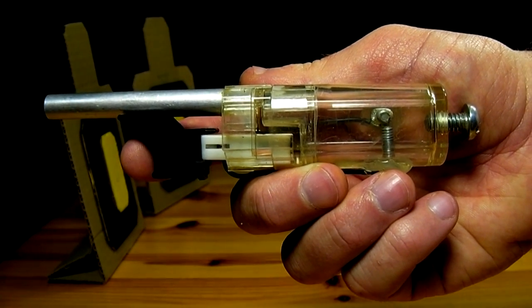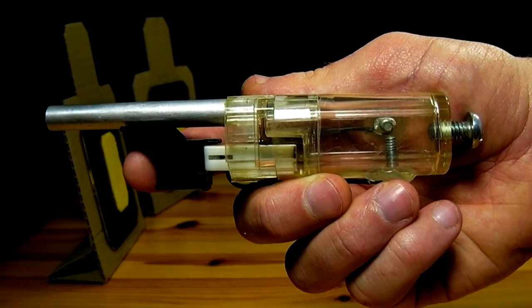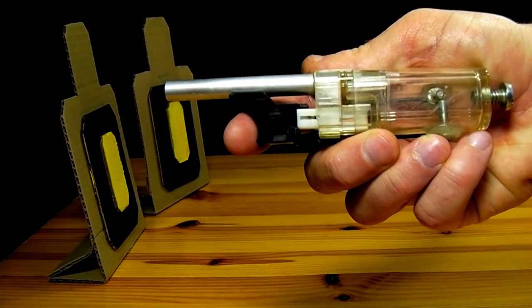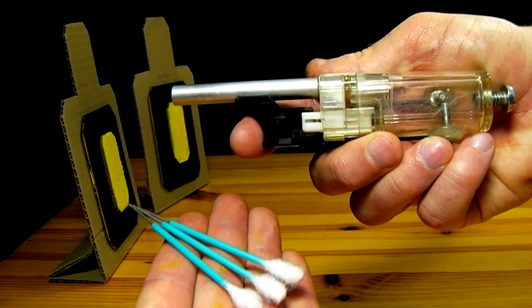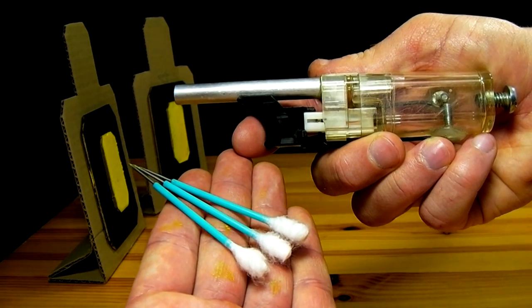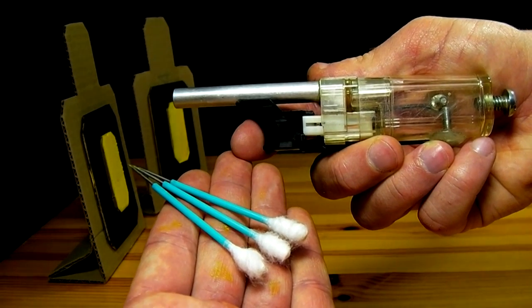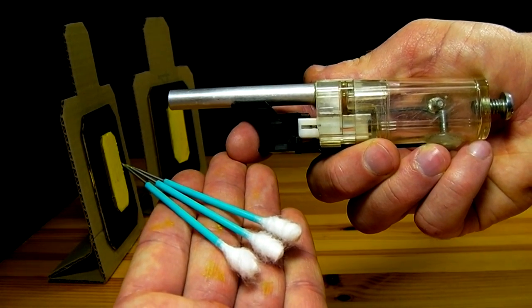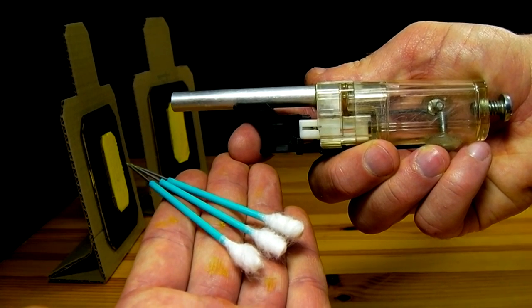In a previous video, I showed how to make this mini cannon out of a standard BBQ lighter. In this video, I'll be showing how to make darts that can be fired out of this cannon. If you have not seen my previous video where I build this cannon, please check the video description for a link.